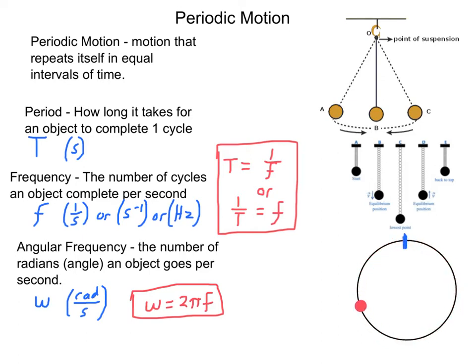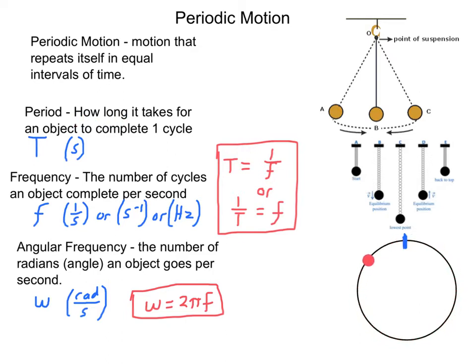Now a few definitions we need to know before we launch into this idea. Period. Period is how long — that word 'long' screams time — how long it takes for an object to complete one cycle.